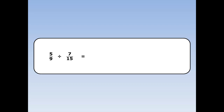5 ninths divided by 7 fifteenths. Turn the second fraction upside down and multiply. Now at this point we want to do some cancelling. 5 and 15 are both on the top, so we can't cancel those. But 15 and 9 — one's on the top, one's on the bottom — and they're both divisible by 3. 15 divided by 3 is 5, and 9 divided by 3 is 3.